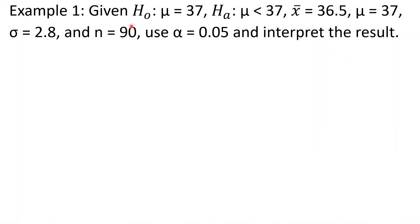Example 1. Given: the null hypothesis is that the population mean μ is equal to 37. The alternative hypothesis is that the population mean μ is less than 37. The sample mean is equal to 36.5, and the population mean is 37, which is stated as the null hypothesis. The sigma, or population standard deviation, is 2.8. The sample size N is 90. Use alpha, or significance level, equal to 0.05 and interpret the result.